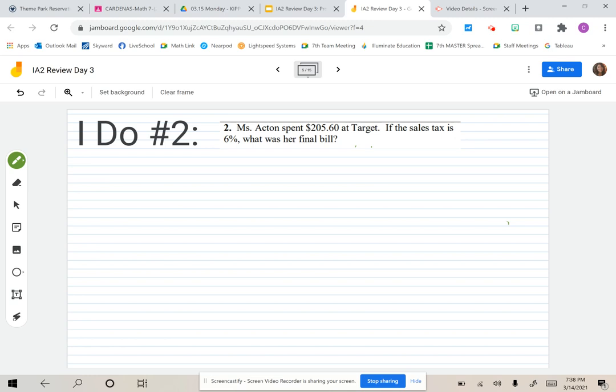We're going to look at another example using our proportions and cross multiplication and division. Ms. Acton spent $205.60 at Target. If the sales tax is 6%, what was her final bill?